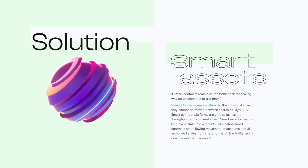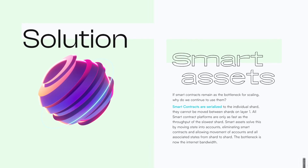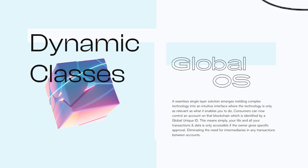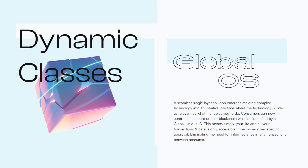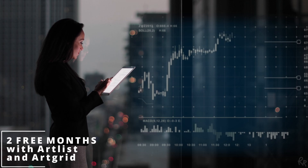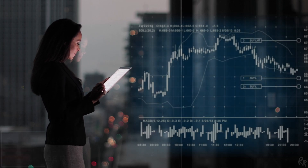So how are smart contracts different from smart assets? Smart contracts cannot be moved between shards at layer 1. Smart assets solve this by moving state into the account, eliminating smart contracts and allowing movement of accounts and all associated states from shard to shard. With a global operating system, consumers can control an account on their blockchain identified by a globally unique ID, meaning your life, transactions, and data are only accessible if the owner gives specific approval, eliminating the need for intermediaries.